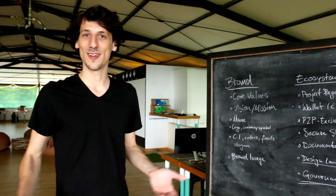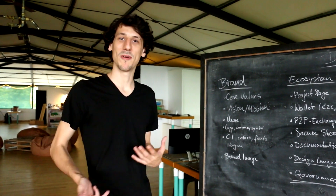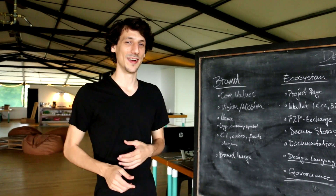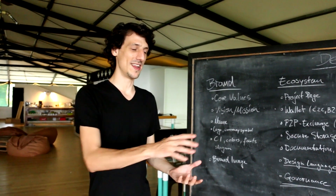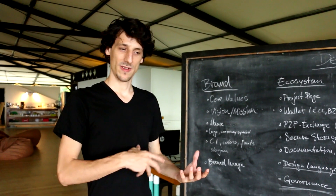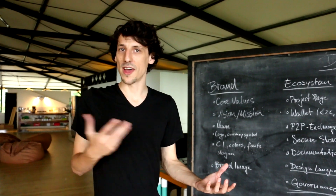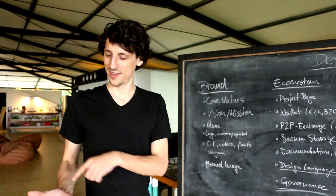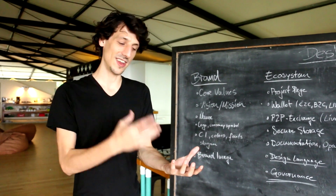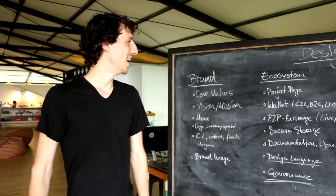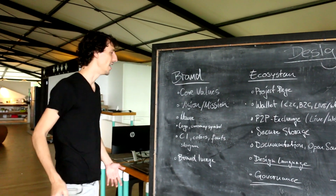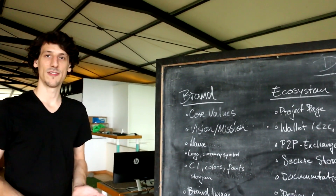Here is a simple draft — a mind map of what's going on in my head right now. I'm trying to define the most important parts of the ecosystem — the other half, what people really see in the end, not the protocol. First there's the brand and the core values of the brand.